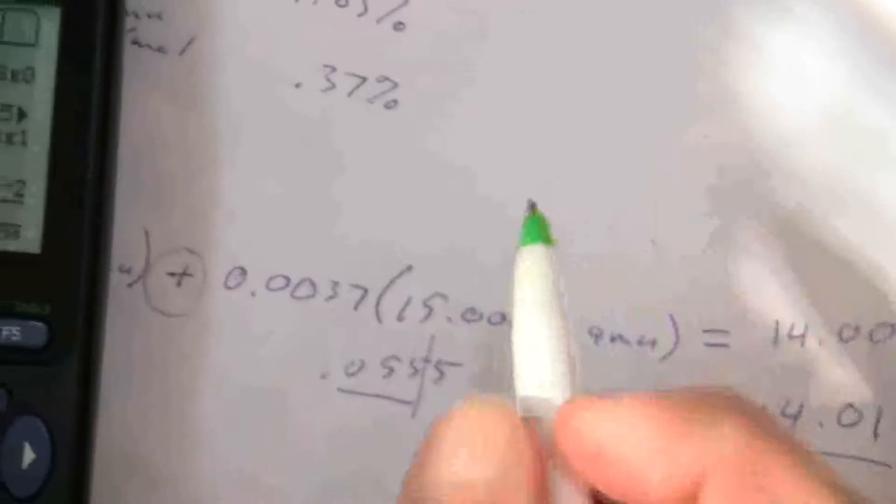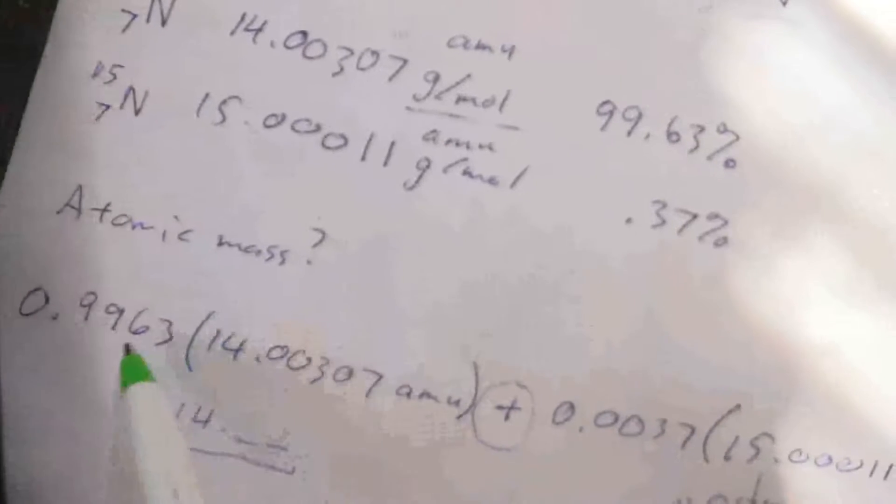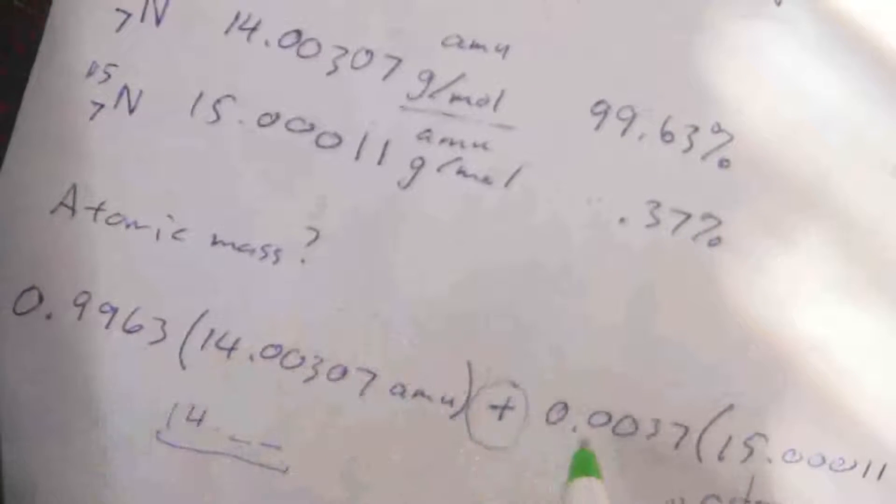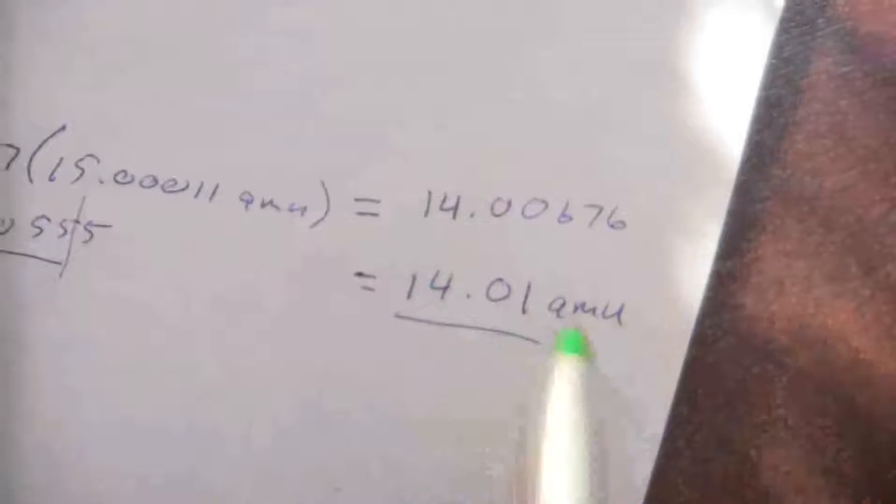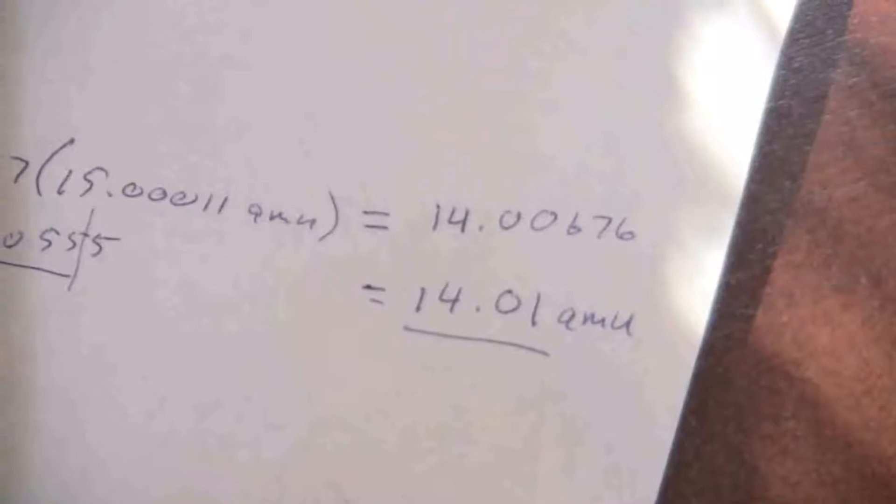So the more precisely we know these abundances, that's what's limiting our significant figures. If we knew those abundances a little bit more precisely, we could find the atomic mass a little bit more precisely.